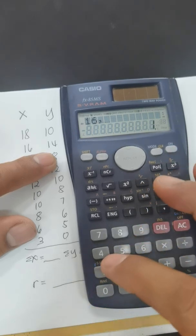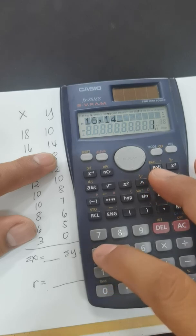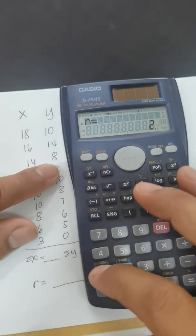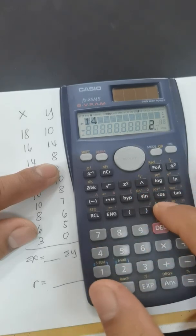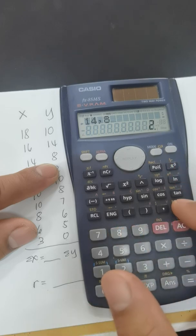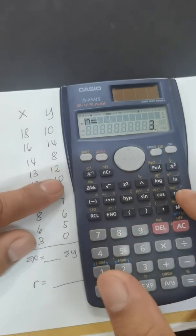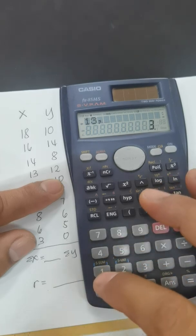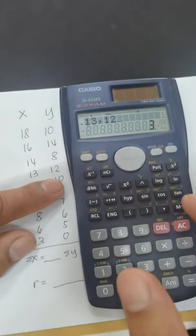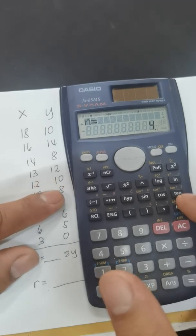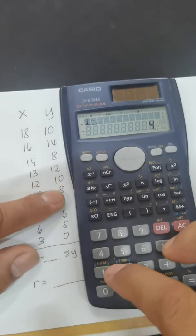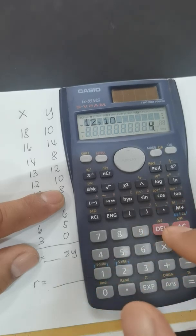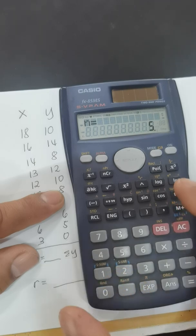14 comma 8 and plus for the third pair. 13 comma 12 and plus, that's the fourth pair. Then 12 comma 10 and plus, that's the fifth pair.